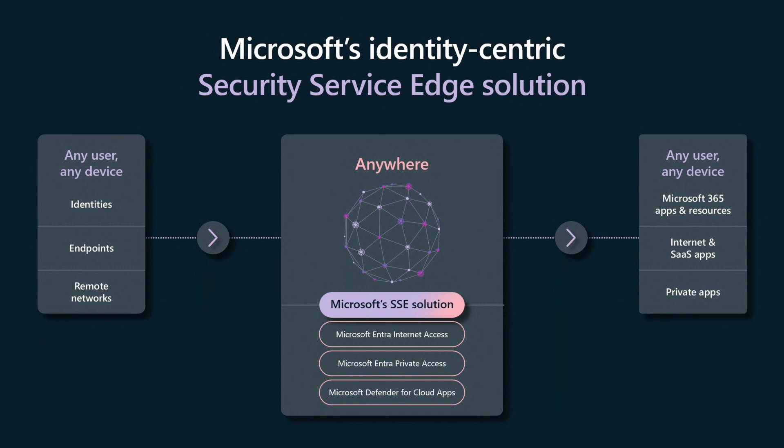This is what we launched in July — two new products: intra-internet access and intra-private access. Those two products, in addition with our CASB product, Defender for Cloud Apps, comprise the secure service edge for Microsoft. What this really enables customers to do is enable anywhere, anytime, any device access to any resource, regardless of where that resource runs.